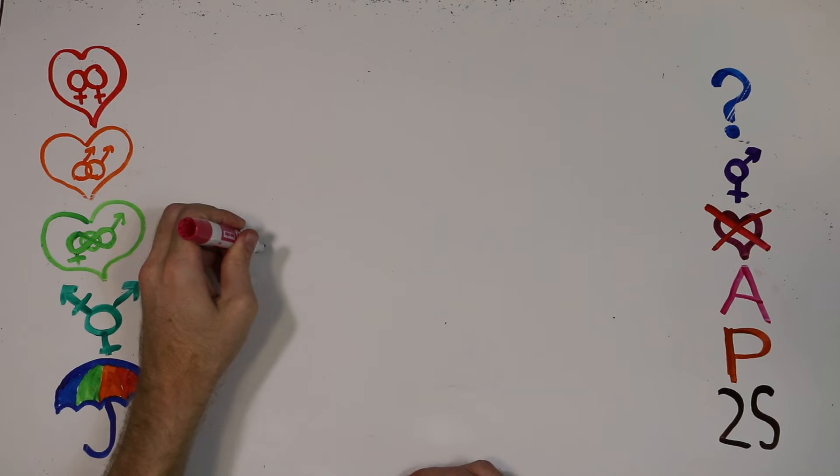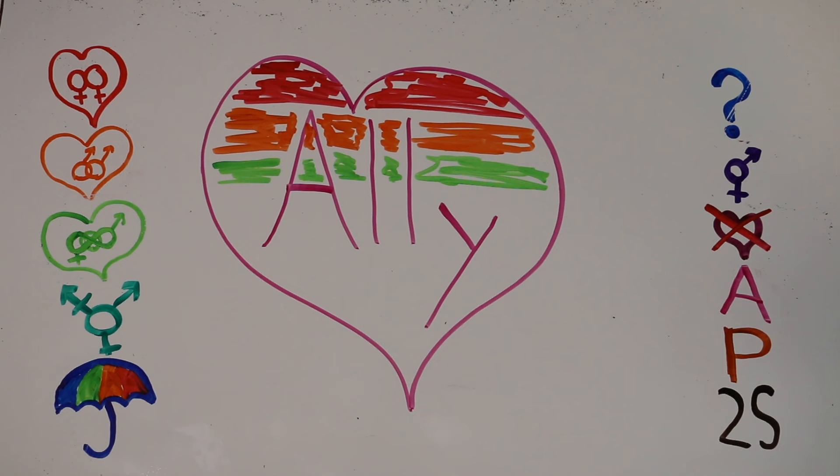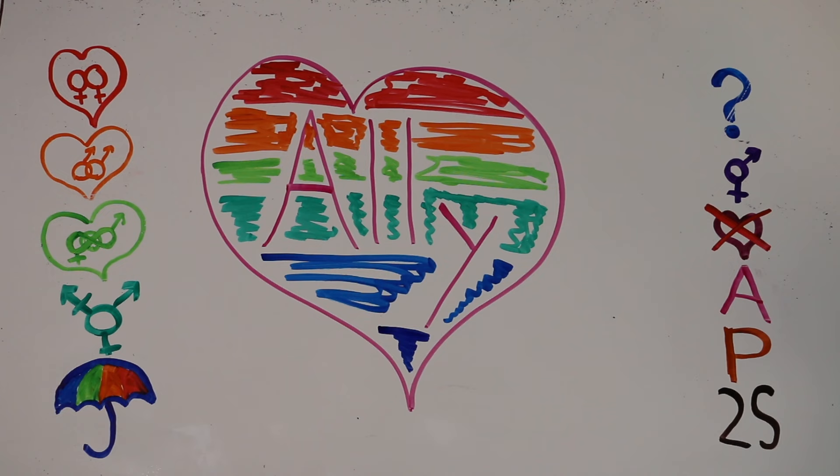The second A doesn't necessarily describe queer people at all. It stands for ally — a person who supports the causes of the LGBT plus community without identifying as queer or LGBT plus themselves. Ideally, this term would include everyone in the world who isn't LGBT plus, but we're not quite there yet.